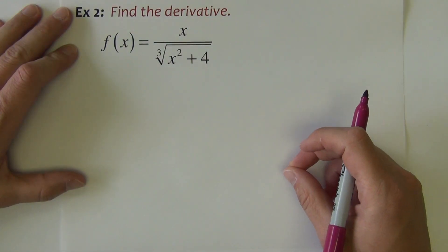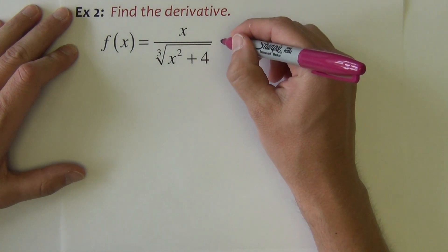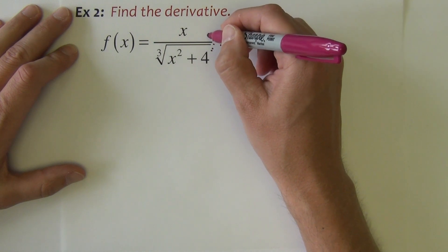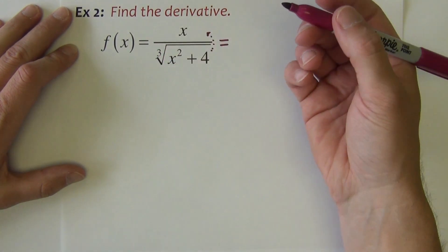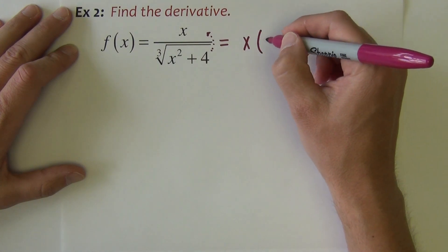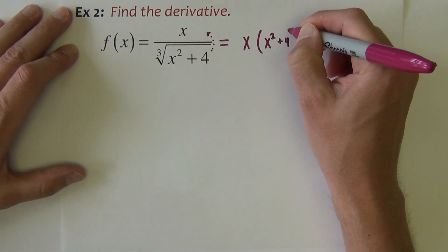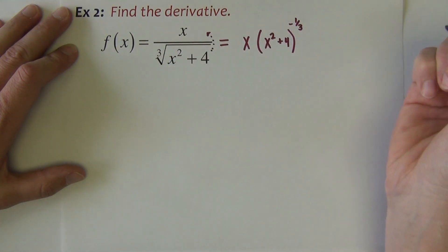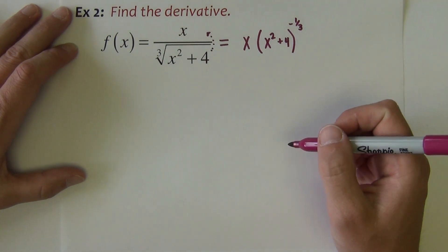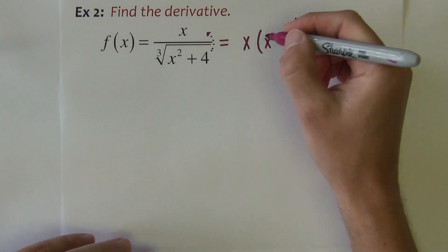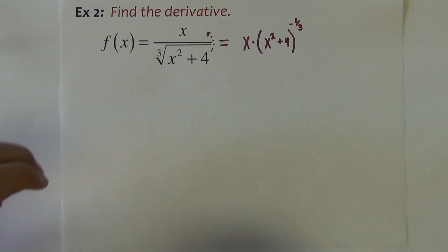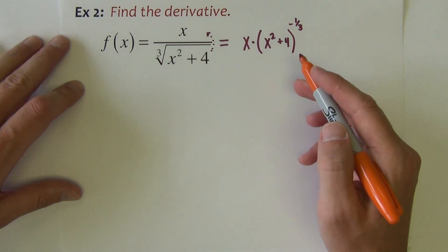In the next example, I'm again going to begin with some rewriting. I'm going to bring the entire radical expression up to the numerator and rewrite it with a fractional power. So I'll have x times (x squared plus 4) — it's a cube root, so it's a 1/3 power, but it'll be a negative 1/3 power as I'm bringing it up to the numerator. Once written as a product, it's very similar to the last example: we're going to do a product rule, and on the second piece we'll have to do a power chain rule.